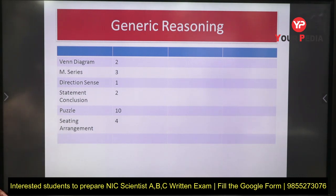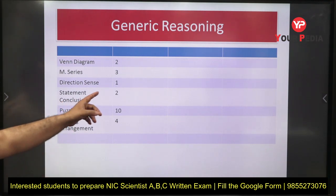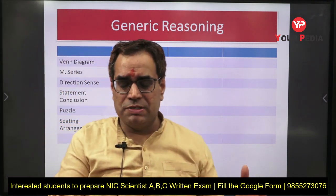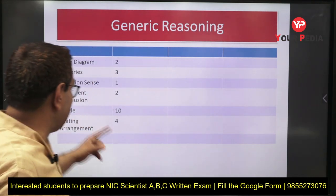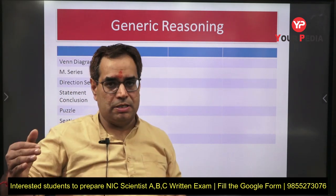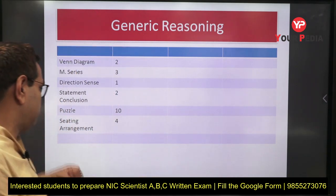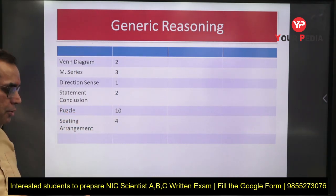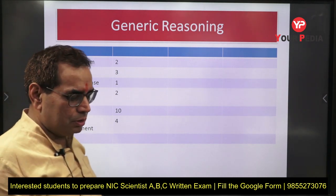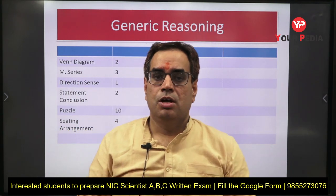For generic reasoning from the 2021 paper: Venn diagrams — two questions; mathematical series — three questions; direction sense — one question; statement and conclusion — two questions. Importantly, there were two puzzles with five questions each, totaling ten questions from puzzles alone. If you can solve a puzzle, that is very beneficial during the exam. Sitting arrangement had four questions.